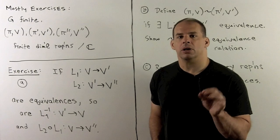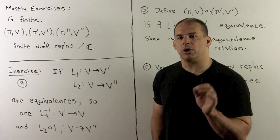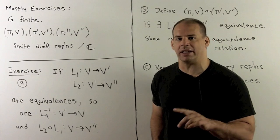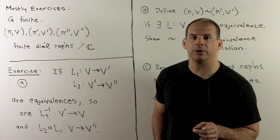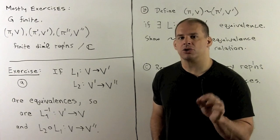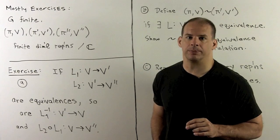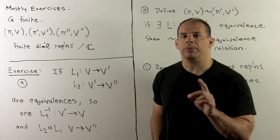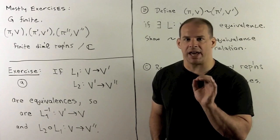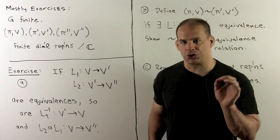For this part, we tie up some loose ends and note some facts about representations that didn't arise naturally in the previous parts. For the next part, we'll shift gears to representations on function spaces. For here, consider this as the exercise section, so I'll state everything as an exercise.